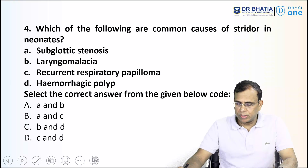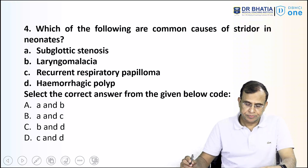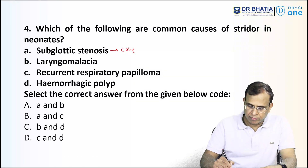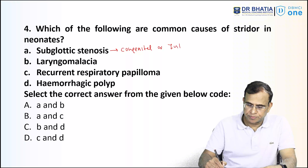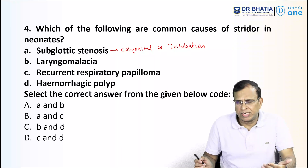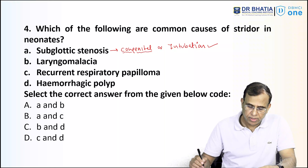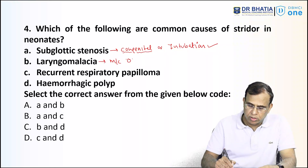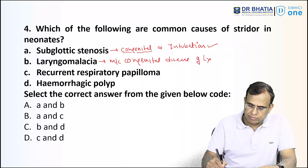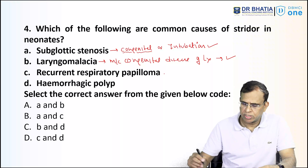Question number four: which of the following are common causes of stridor in neonates? Options include subglottic stenosis, laryngomalacia, recurrent respiratory papillomatosis, and hemorrhagic polyp. Subglottic stenosis can be congenital or due to intubation. The congenital form can present as stridor in neonates, so this is possible. Laryngomalacia is the most common congenital disease of the larynx, and its most common presentation is stridor in neonates a few months after birth. So both A and B are possible.